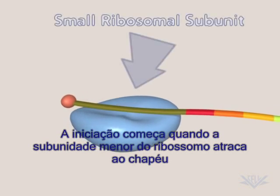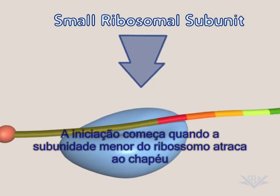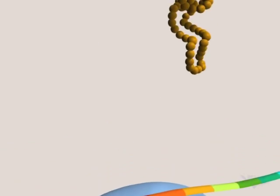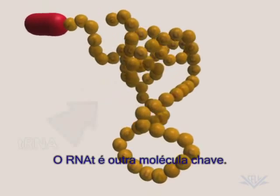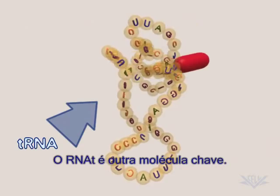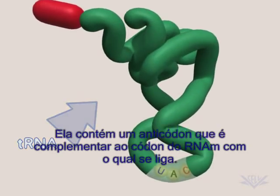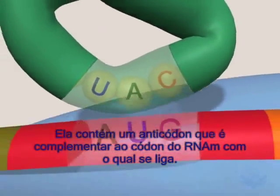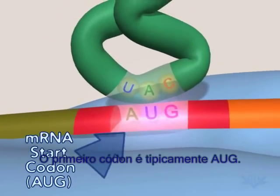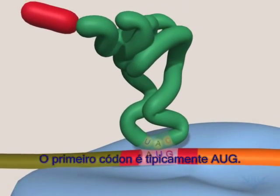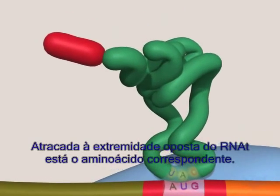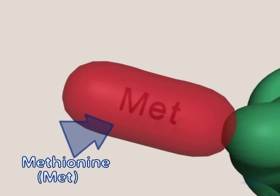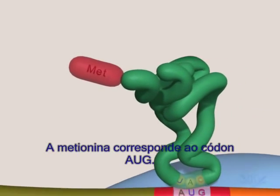Translation initiation begins when the small subunit of the ribosome attaches to the cap and moves to the translation initiation site. tRNA is another key molecule. It contains an anticodon that is complementary to the mRNA codon to which it binds. The first mRNA codon is typically AUG, and attached to the end of the tRNA is the corresponding amino acid — methionine corresponds to the AUG codon.